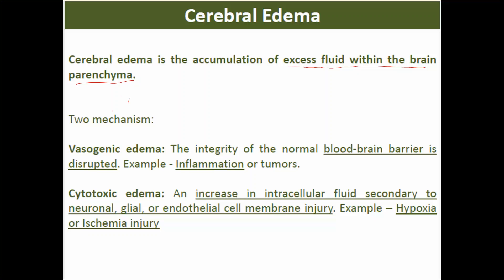There are two mechanisms by which cerebral edema can occur. First is vasogenic edema, where the integrity of the normal blood-brain barrier is disrupted — usually seen in inflammation and tumors. Second is cytotoxic edema, which is related to an increase in intracellular fluid secondary to neuronal, glial, or endothelial cell membrane injury, seen in hypoxia or ischemic injury.